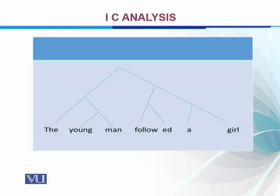For example, if you look at the sentence 'the young man followed a girl,' we know that each of the constituents has been very well displayed and separated from others — 'followed' has gone up to the morpheme level. But we are not sure what these constituents are.